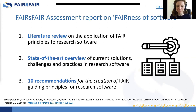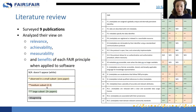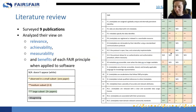To describe the three parts: first, the literature review — we surveyed nine publications and analyzed them on relevance, achievability, measurability, and benefits that the FAIR principles could offer. Our measurement scale was a small subset (one publication, shown in yellow), a medium subset (two to three publications), and a large subset (three papers or more). As you can see, there's a non-available category and some green and orange, mapping the FAIR data principles to what we see in the literature about software.